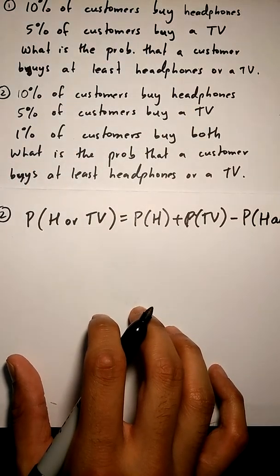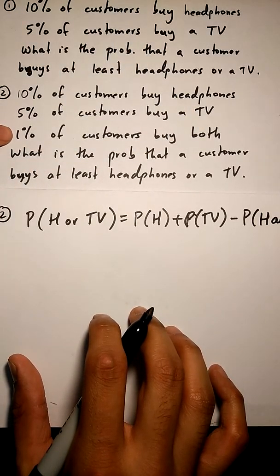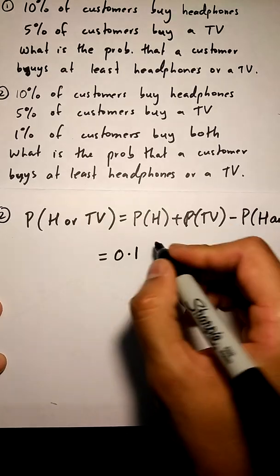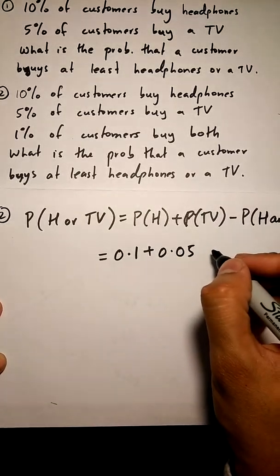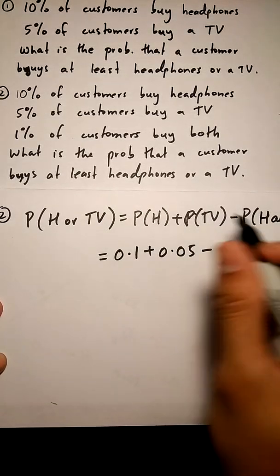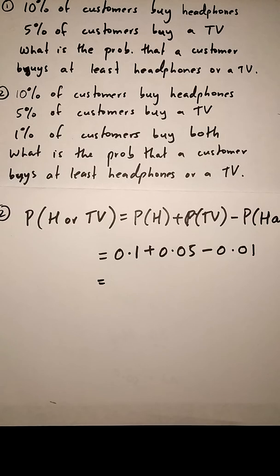However, if you have an example where they give us both, we cannot solve this on a tree diagram. We have to use our non-mutually exclusive formula. Okay, so the probability that a customer buys headphones or a TV is going to equal to the probability that a customer buys headphones